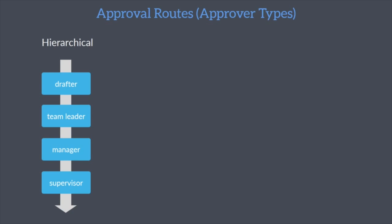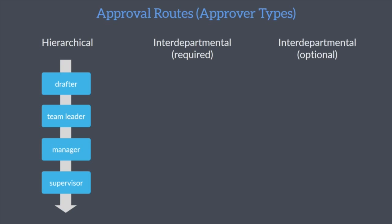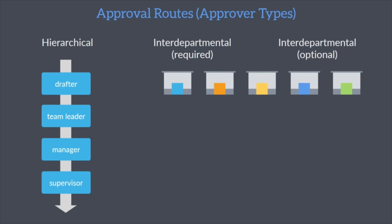For documents that require the collaboration of several departments working together, there are two options: interdepartmental required and interdepartmental optional. Both involve the usage of various departments and can be set to each individual selected on a user's approval route. With the required option, the approval process requires the selected users to approve for a complete document. The optional selection means the approval process can continue even without the explicit consent of that individual.